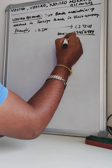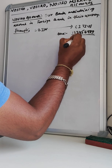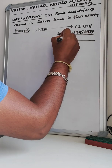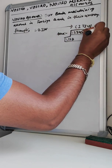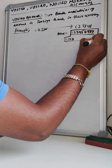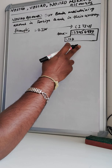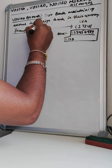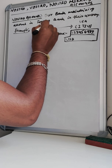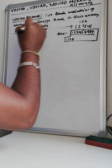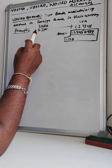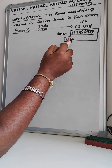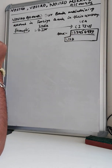This account is called a Nostro account, and it will be in USD — it will not be in Indian Rupees because it is maintained in the USA. So SBI Bank maintaining an account in Citibank US in their currency, that is in USD, is called a Nostro account.